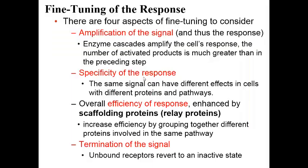The transduction pathway also has the ability to amplify the signal. Enzyme cascades amplify the cell's response — the number of activated products is much greater than the preceding step. One protein kinase activates two, two activate four, four activate eight, eight activate sixteen. As the cell goes through the phosphorylation cascade, with each step a greater number of proteins become phosphorylated, amplifying the response. So a very small amount of ligand can create a very large cellular response.